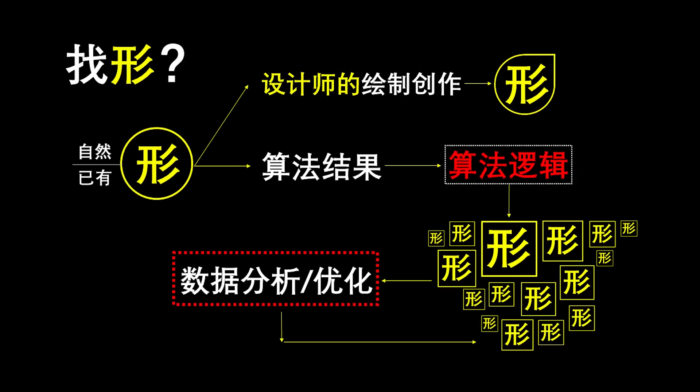最后总结：通过找形的方式，我们可以理解自然界中或已有形态背后的逻辑——不论是形式逻辑还是力学逻辑，都非常重要。把逻辑总结出来，我们会有一系列形态，这些形态不仅仅是几何体，同时也带有自己的数据：容量、每个点上力的大小等。我们甚至可以对这些点和力进行优化，再反作用于形，形成更好的形态。这就是找形设计逻辑的优势——让设计变得非常理性，并且形成可以迭代的结果。这一次的小网课就到这里，再见。